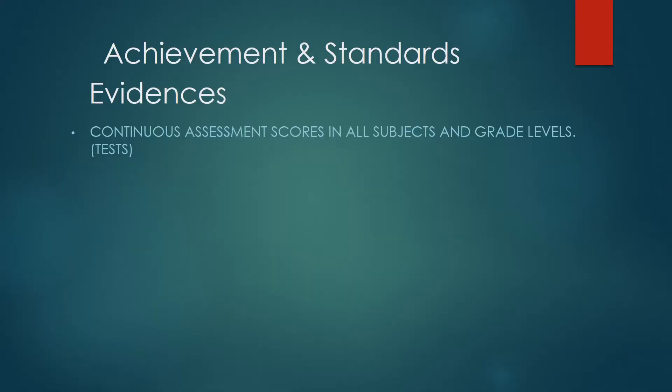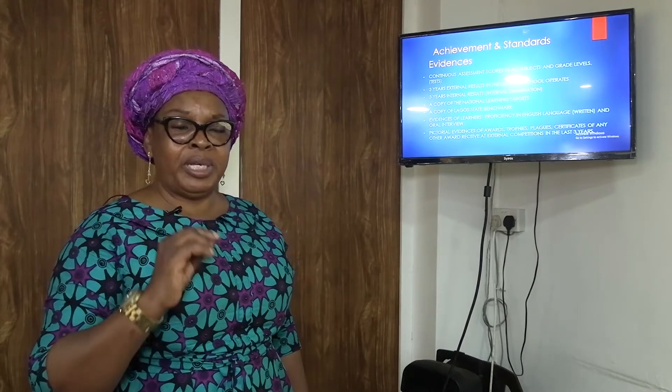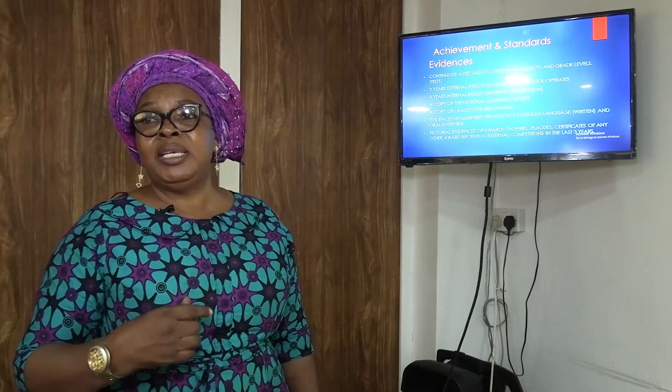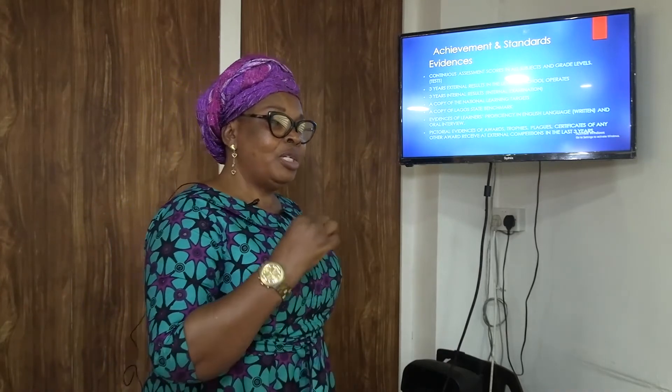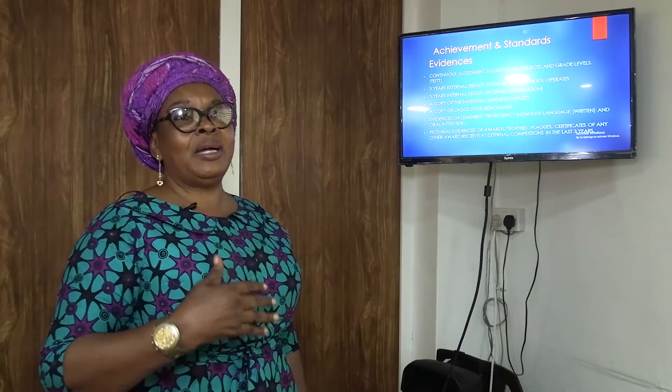Let's start with number one: achieving our standards. What are those things we have to look out for when gathering evidences? Number one, we want to collect the assessment scores in all subjects across all grade levels — all the classes that school operates, whether it's a nursery primary school, a college, or a higher college that does Cambridge exams. We need to collect the results of their continuous assessment.